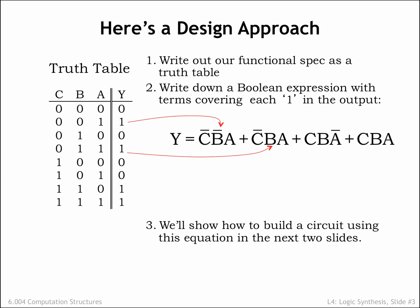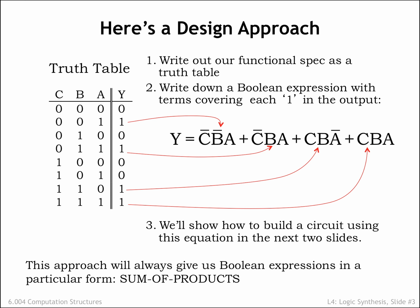The Boolean expression corresponding to row 4 is NOT C and B and A. And so on for rows 7 and 8. The approach will always give us an expression in the form of a sum of products.